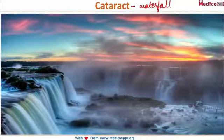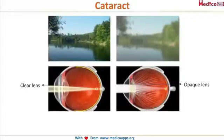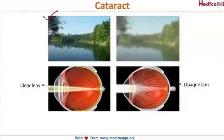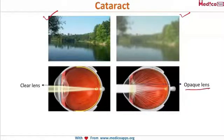This is the vision all of us have right now — that is clear lens vision. However, this was the hazy vision I was talking about, like when you stand in a waterfall. This hazy vision occurs when the lens is opaque, and this is how a cataract patient sees.